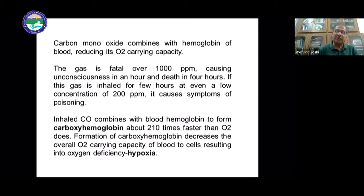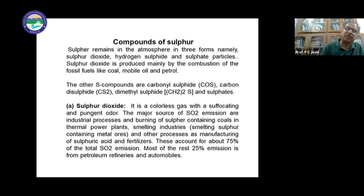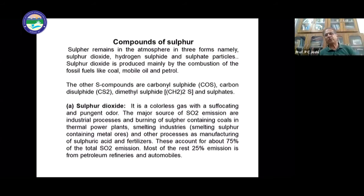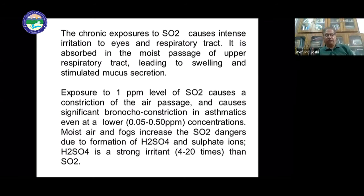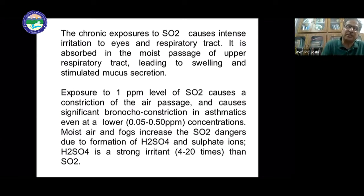The third important pollutant is sulfur compounds. Sulfur dioxide is a colorless gas. Exposure to 1 ppm level of sulfur dioxide causes constriction of the air passage and significant bronchoconstriction in asthmatics. Moist air and fogs increase the sulfur dioxide danger due to the formation of sulfuric acid spray and sulfate particles.